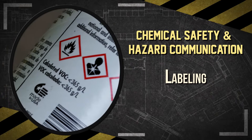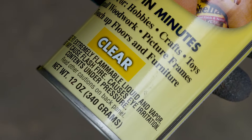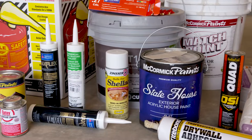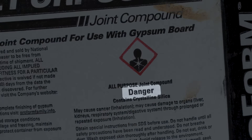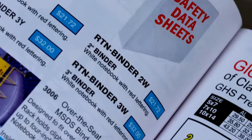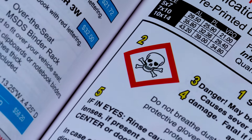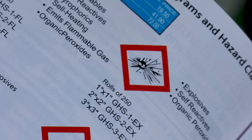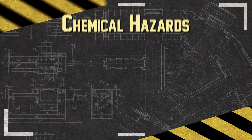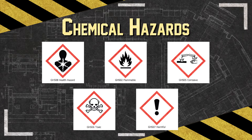Labels provide an immediate warning of hazards. Product manufacturers are required to provide labels on all shipped containers with information including product identifier or product name, signal words like danger or warning, hazard statements like fatal if inhaled, and hazard pictograms that alert users of the chemical hazards to which they may be exposed. Each pictogram consists of a symbol on a white background framed within a red border and represents a distinct hazard such as a health hazard, flammable, corrosive, toxic, and irritant.